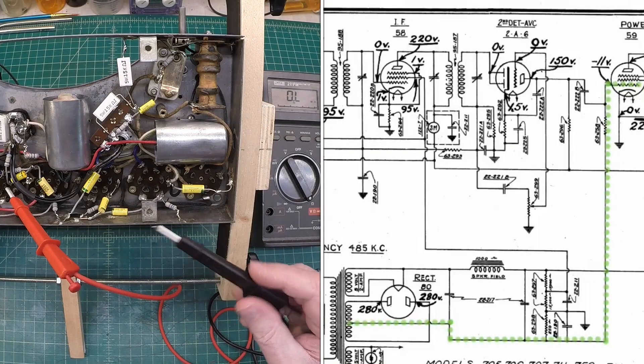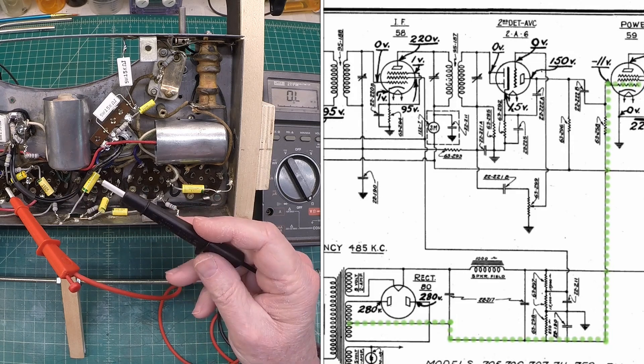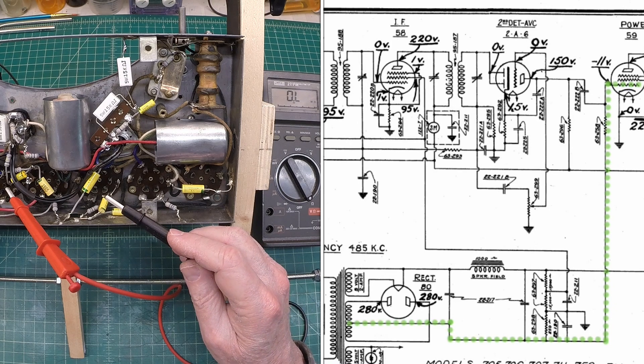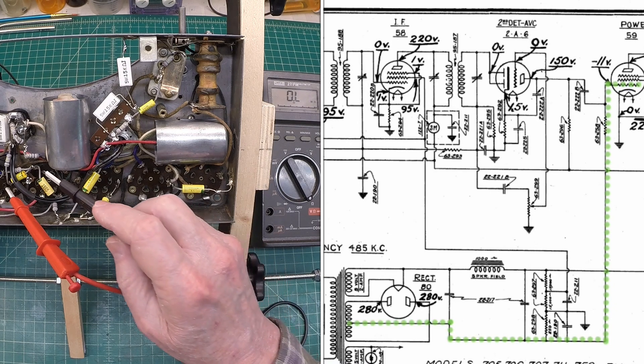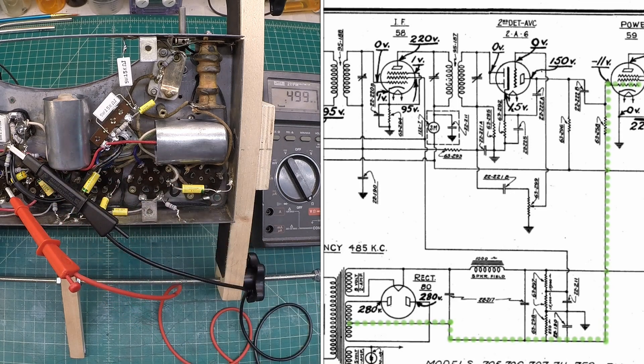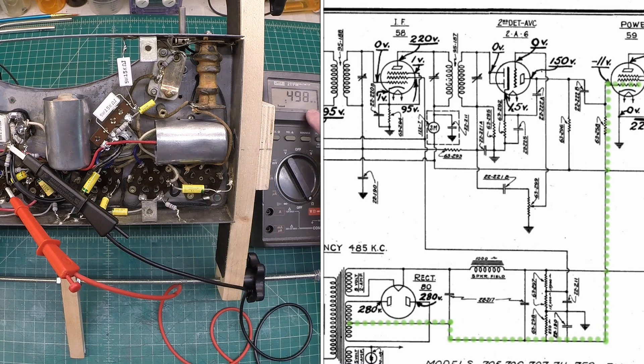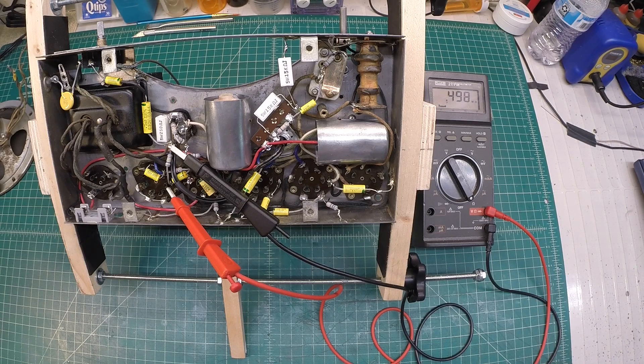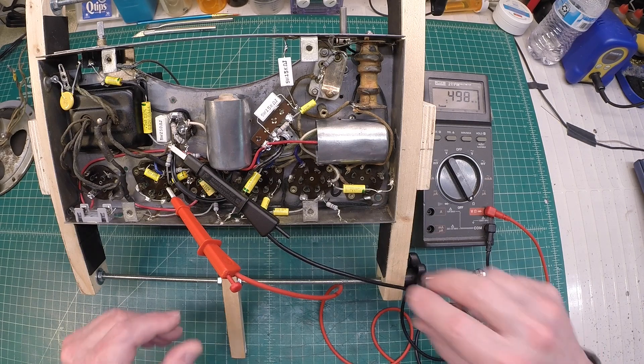And lastly, if you see what I have highlighted there in green, we're going to just check the dropping resistor there for the bias of the 59 tube. And you can see my connection points there. We're just reading across this resistor here. And you can see we're spot on at right at 500k, the original design 490k. So we're good there.